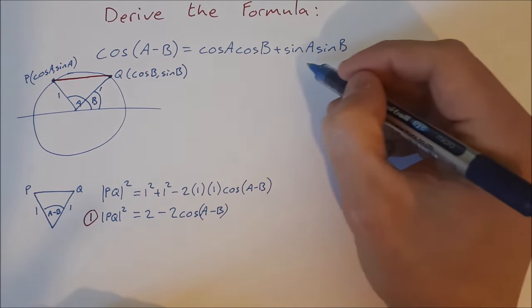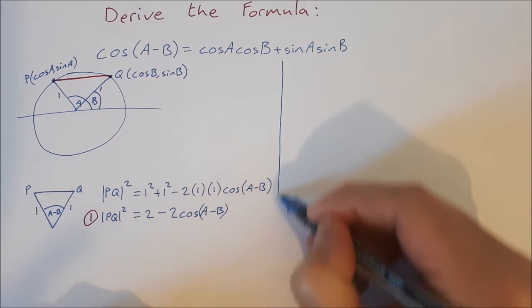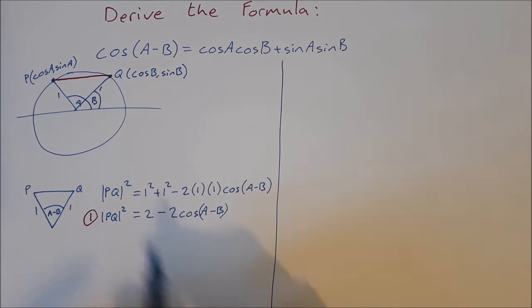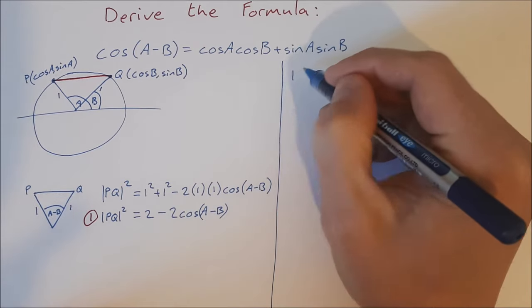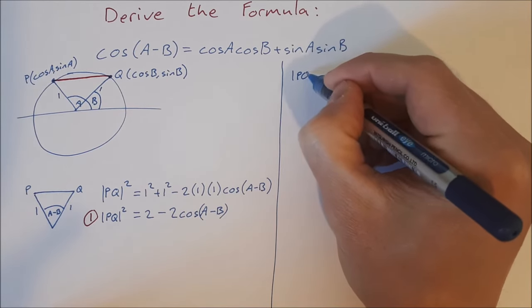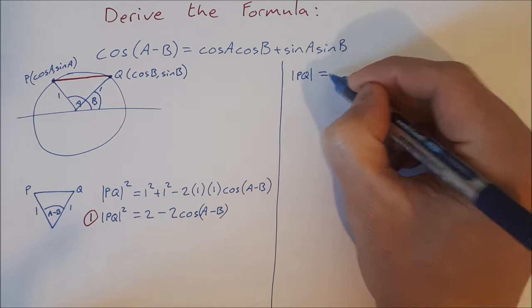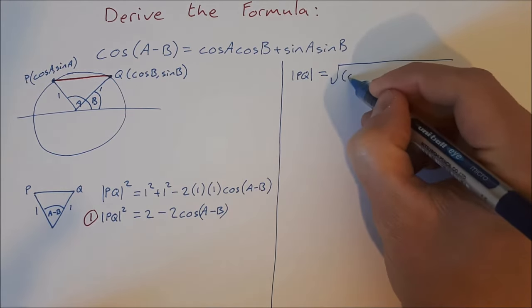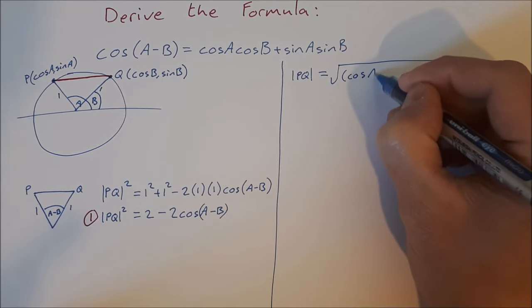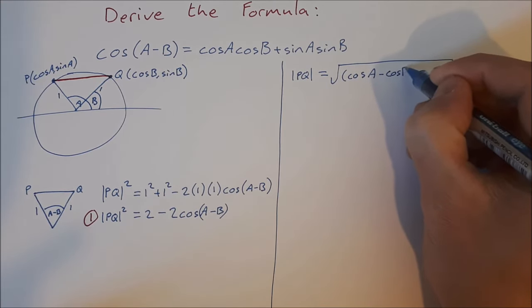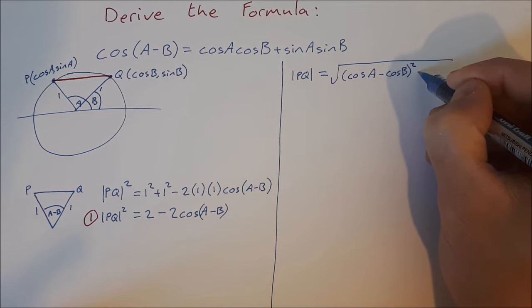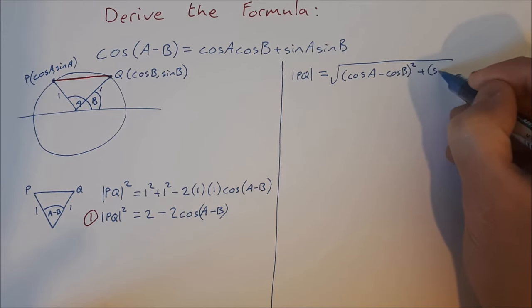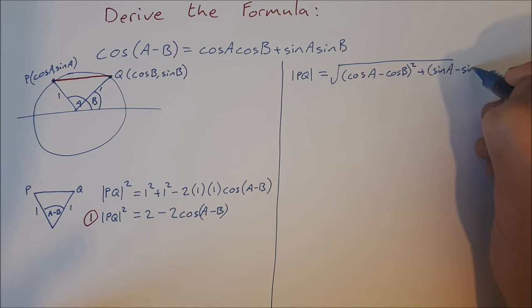Now I can also find the distance PQ using the distance formula. The length PQ equals the square root of (cos a - cos b)² + (sin a - sin b)².